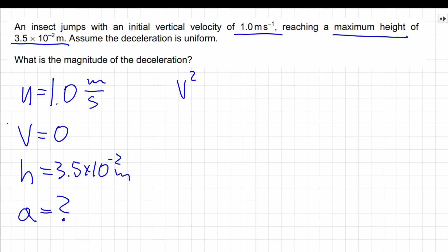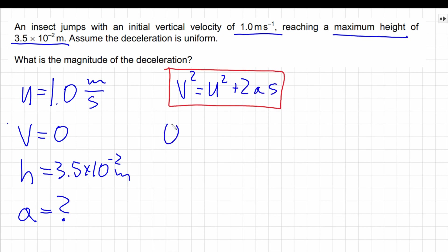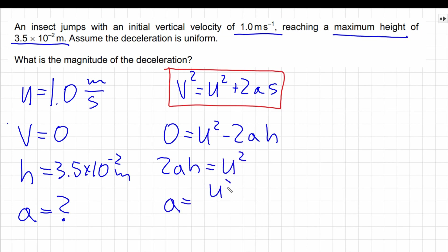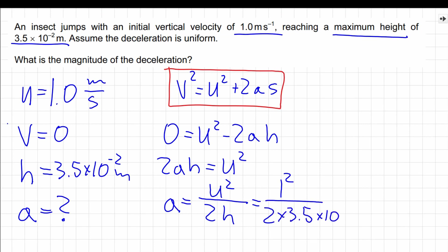We can start with the equation covered in one of our previous videos. By putting the initial information into this equation, we get 0 equals u squared minus 2as. Now we can rearrange: 2as equals u squared, so acceleration equals u squared divided by 2h. Replacing all symbols with numerical values gives us a final result of 143 meters per second squared.